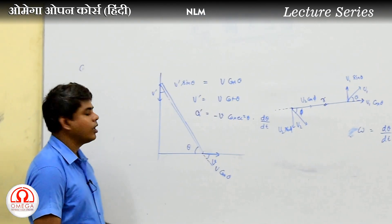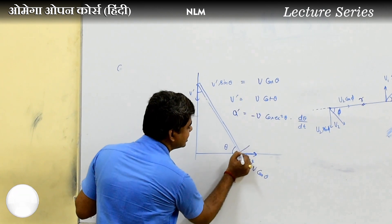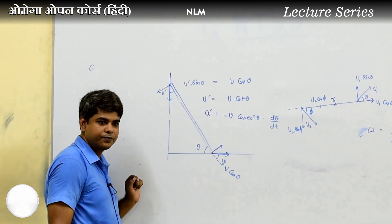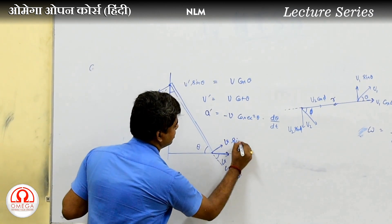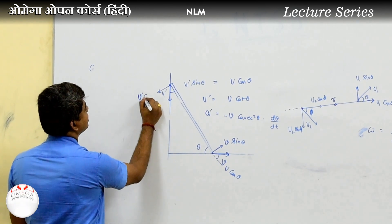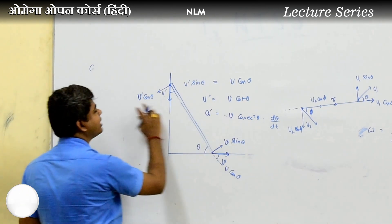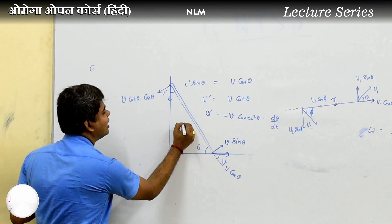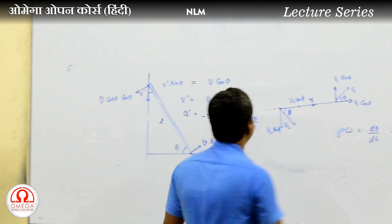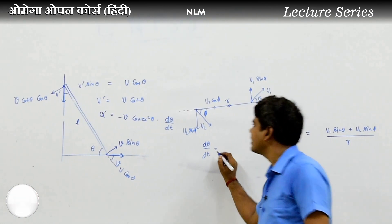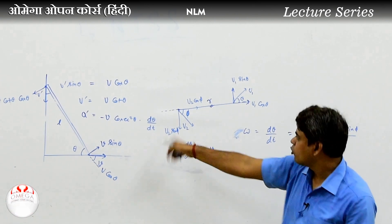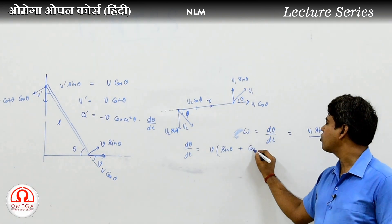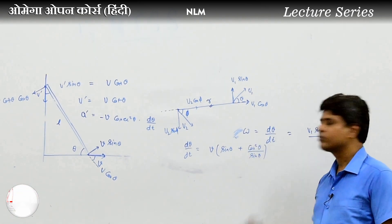Now, for dθ/dt, we use the tangential velocity. We can write both the radial and tangential components — both in opposite directions — as V sin theta plus cos theta into cos theta, divided by sin theta.